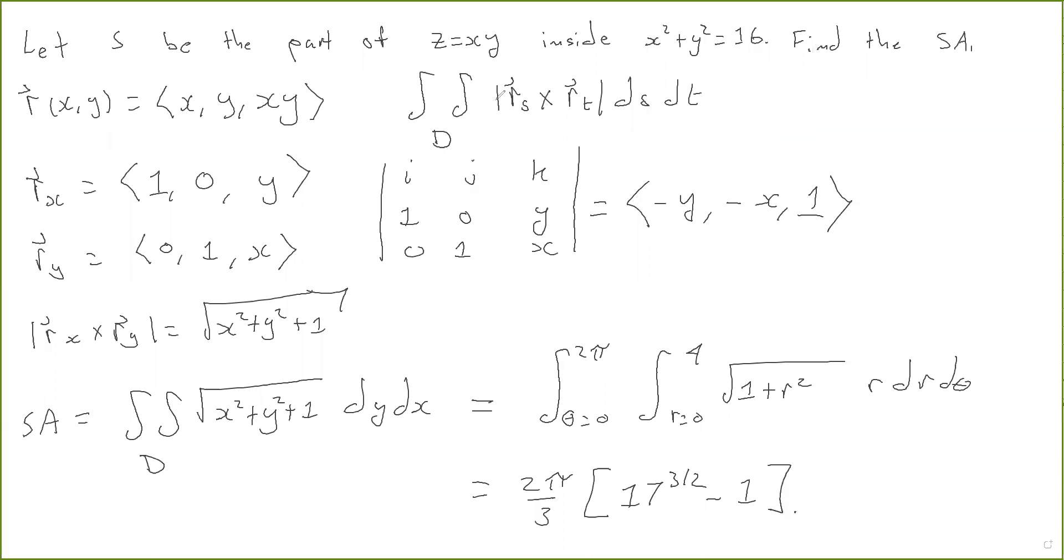Okay, so just remember that this is the formula right here. R is the parameterization. The parameters are S and T. This is the tangent vector with respect to S. This is the tangent vector with respect to T.